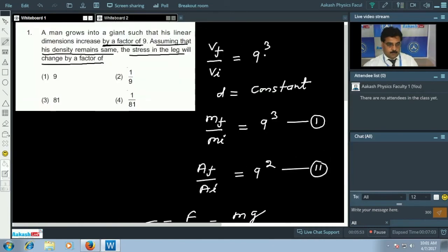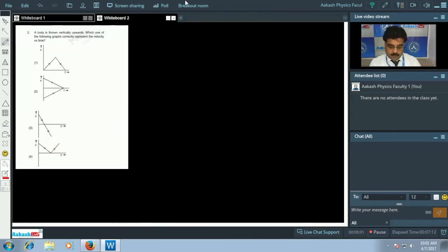So now we are going to take question number 2. Question number 2 says a body is thrown vertically upward. Which one of the following graphs correctly represents the velocity versus time? The question says body is going up, so we can say acceleration due to gravity will act in the downward direction.